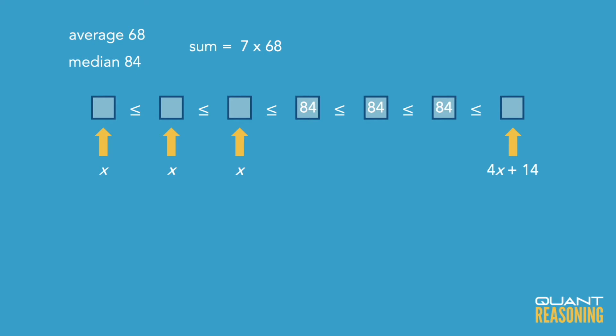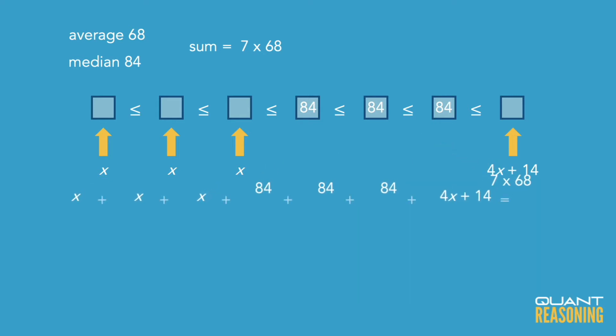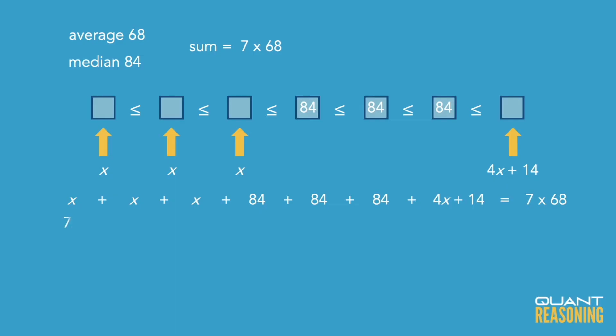Now we solve: x plus x plus x plus 84 plus 84 plus 84 plus 4x plus 14 equals 7 times 68. There's an opportunity to simplify here. Adding all the x's together gives 7x, and I notice a common factor of 7 among all the terms.